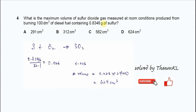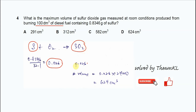Try to get the mole. After the sulfur gets burnt, it will form SO₂. The diesel fuel contains this mass of sulfur, so we use 0.8346 over the molar mass of sulfur, which is 32.1, and you get 0.026 moles of sulfur. Since one mole of sulfur forms one mole of SO₂, 0.026 moles of sulfur will form 0.026 moles of SO₂.